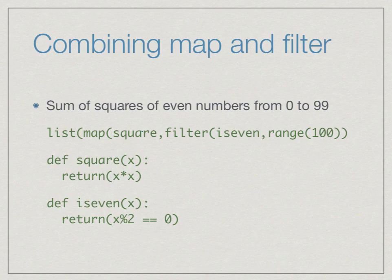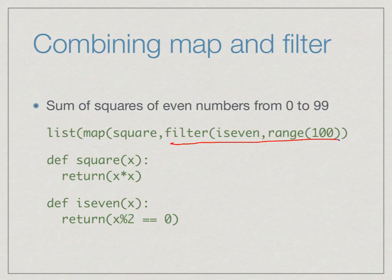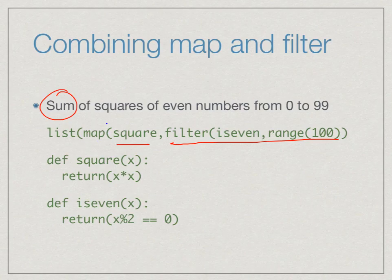For a concrete example, suppose we have the list of numbers from 0 to 99. We want to first pull out only the even numbers — that's a filter operation — and then for each of those even numbers we want to square them, which is a map operation. So we take the even numbers using filter, then map square over them to get the squares of even numbers. The sum is not part of this function, but the combination of filter followed by map gives us what we need, where square and is_even are defined functions.